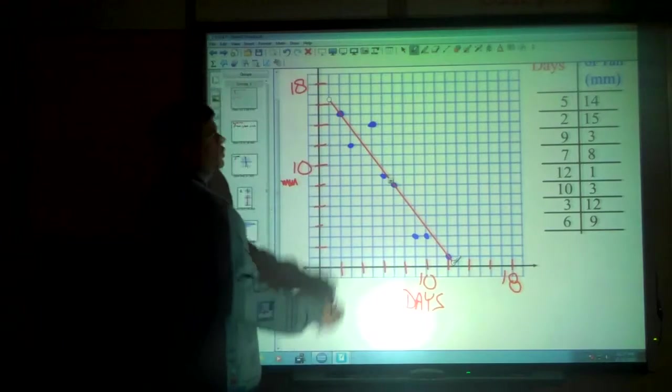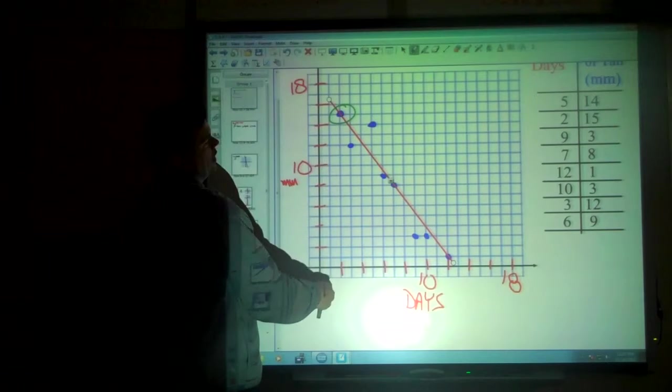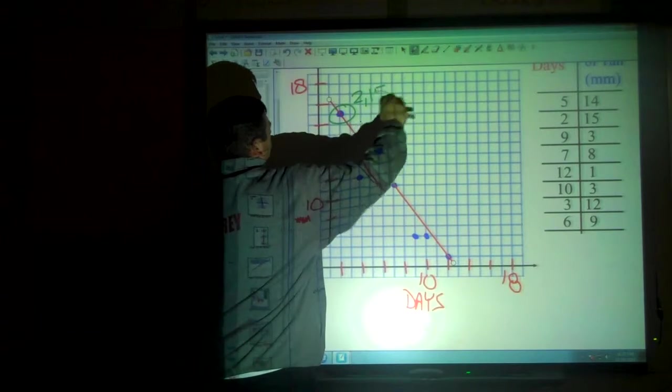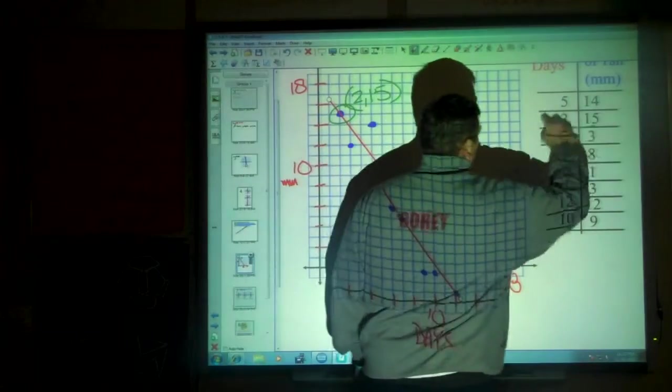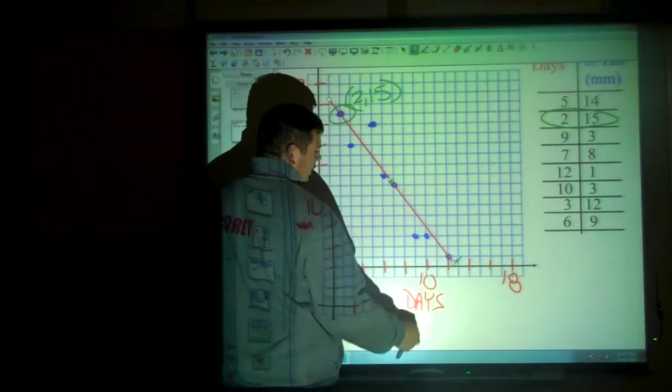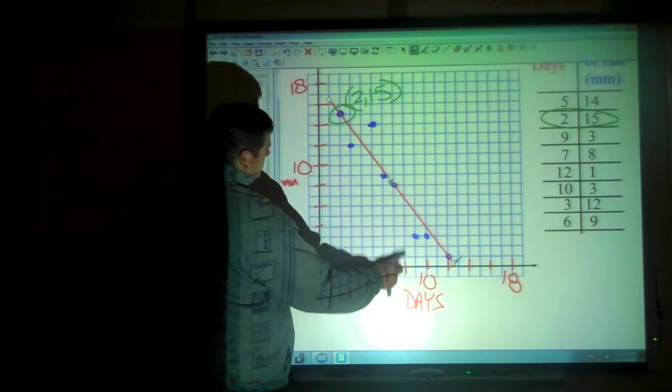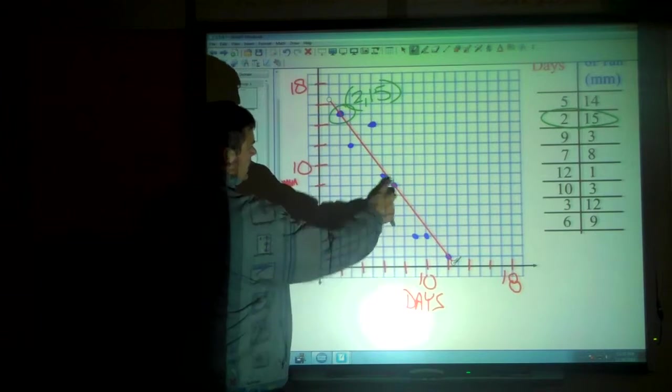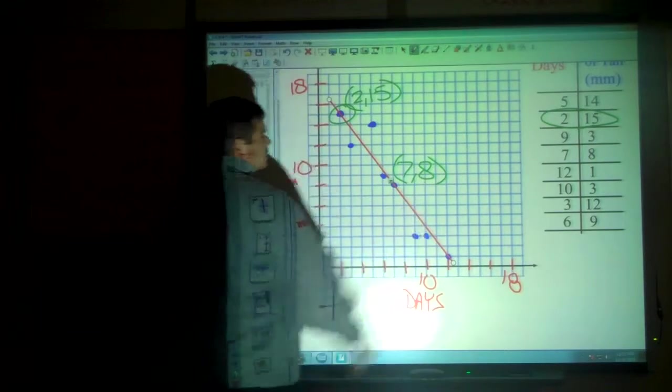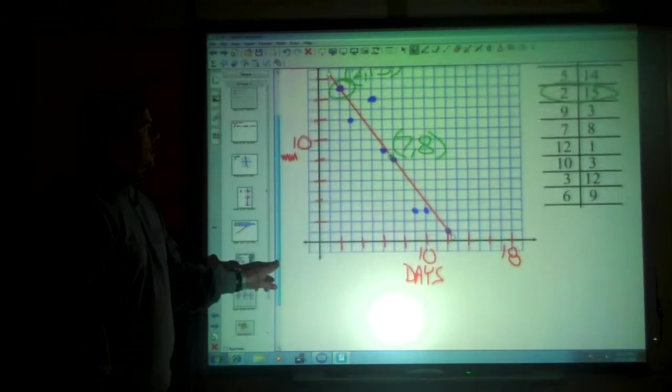Because we just have to choose two coordinates. We might choose this one right here at the coordinate 2, 15. I need one of those. I need one more. So I could use 12, 1 if I wanted to. Or I could use this one here at 7, 8. Whichever. It doesn't matter. So I have two coordinates. From those two coordinates, I should be able to find the slope.